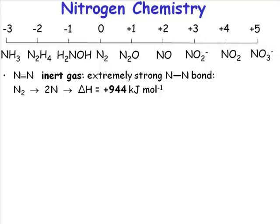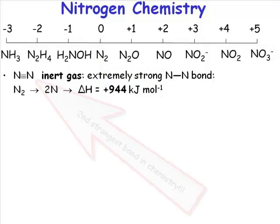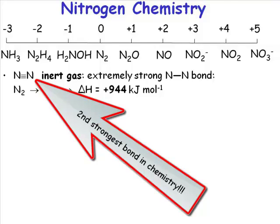Any reactivity of N2 requires us to break a triple bond, a non-polar triple bond, with a bond dissociation energy of plus 944 kilojoules per mole. That nitrogen-nitrogen bond is the second strongest bond in chemistry.